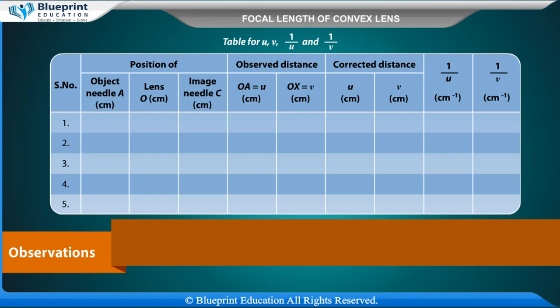Table for U, V, 1/U and 1/V: Columns include serial number, position of object needle A (cm), lens position O (cm), image needle position C (cm), observed distance OA = U (cm), OC = V (cm), corrected distance U (cm), corrected V (cm), 1/U (cm⁻¹), and 1/V (cm⁻¹).